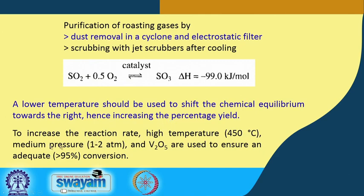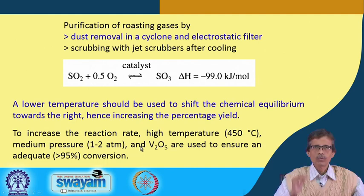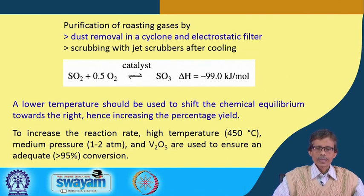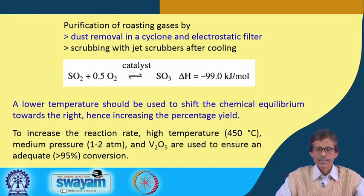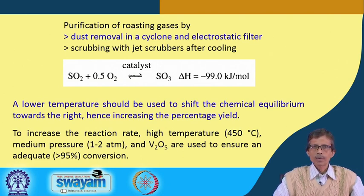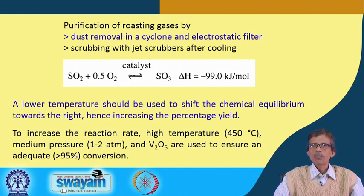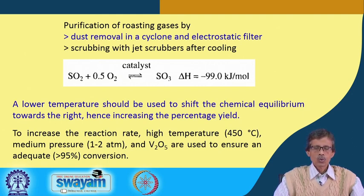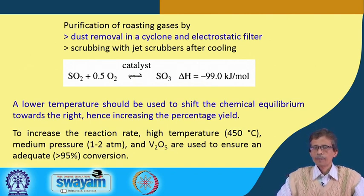If we try to increase the reaction rate — that means, if we try to decrease the activation barrier — at high temperature we cannot go down to a very low temperature because the rate of the reaction would be sacrificed. A medium pressure of only 1 to 2 atmospheric pressure of O₂ is sufficient for this conversion, and the catalyst is V₂O₅.